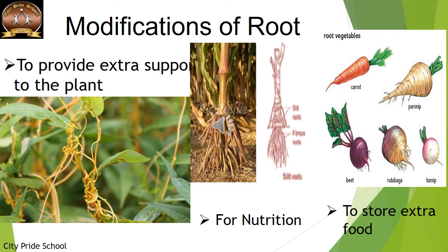Apart from the main functions, some modified functions are also performed by roots. One is to provide nutrition — these are the parasitic roots developed in the daughter plant, which help in extracting nutrient material from the stem of the host plant. Then we have stilt roots, found in sugar cane and corn plants, which rise from the nodes and move down to provide extra support to the plant body.